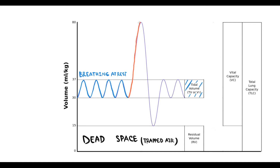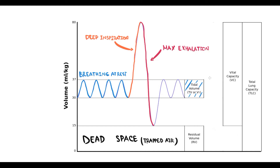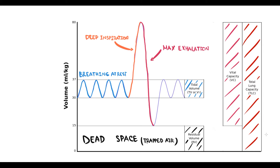After that, the patient should take a deep inspiration and then breathe out all air as fast as they can. As we know, we cannot operate the air in the dead space. In spirometry, the volume of air that we cannot operate we call residual volume. The volume of air that we can operate we call vital capacity. And the total amount of air in the lungs we call total lung capacity. So basically, total lung capacity is the sum of residual volume and vital capacity.